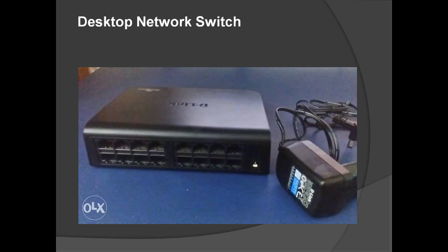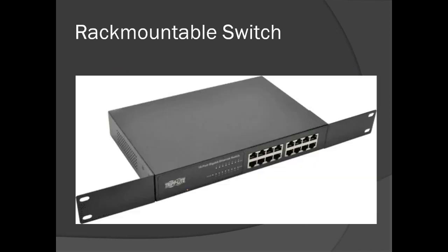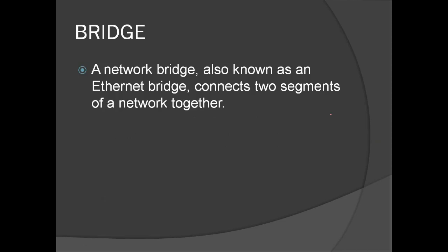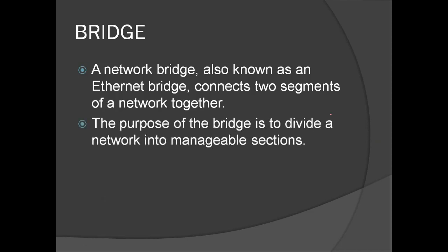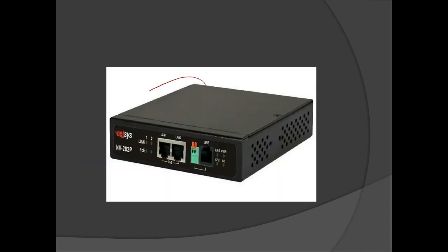We have the desktop network switch and the rack-mountable switch, which has brackets for mounting on an open bay rack, server rack, or data cabinet. We have the bridge, also known as an Ethernet bridge — it connects two segments of a network together. The purpose of a bridge is to divide a network into manageable sections and avoid collision among segments. It is used to connect different two LANs for interconnectivity.